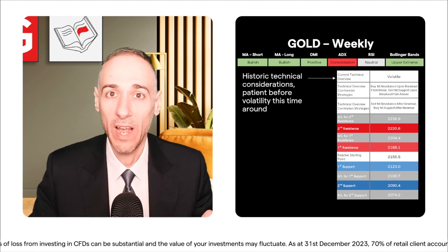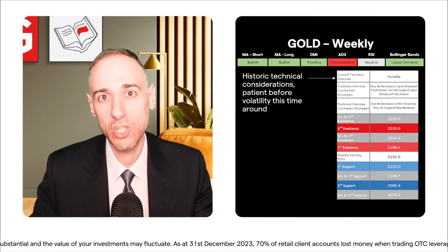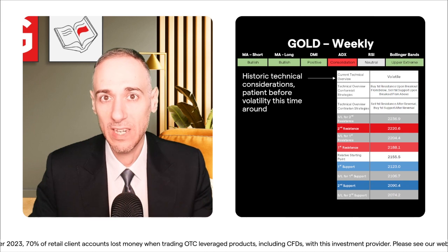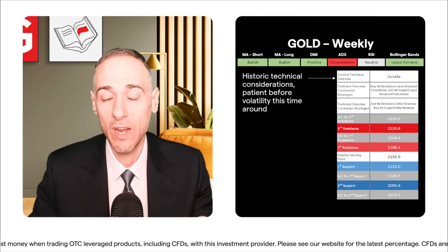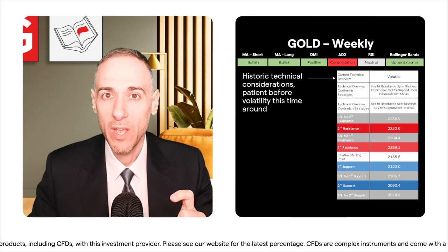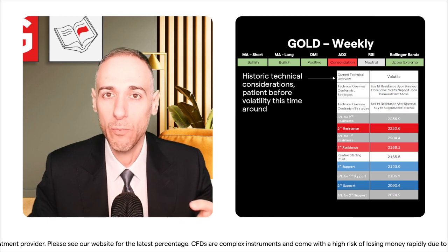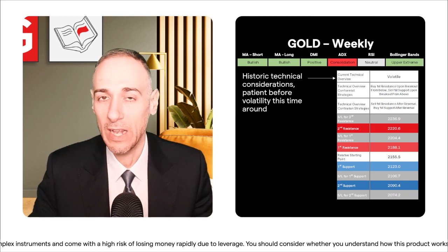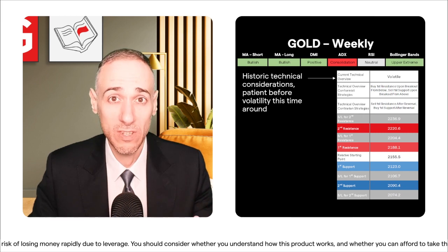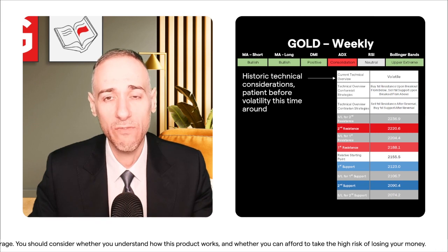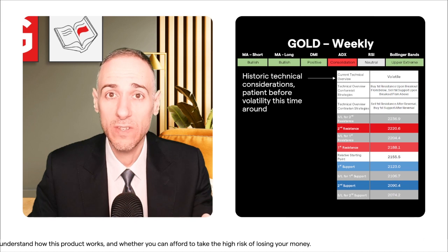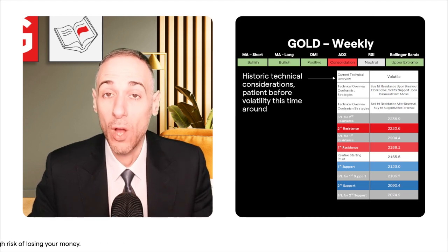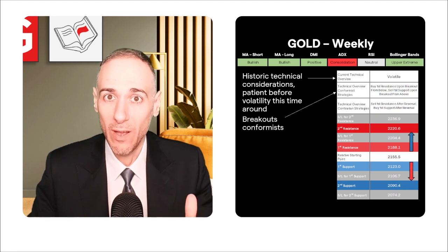The technical overview for both the weekly and daily is 'volatile,' which has a lot to do with historical technical considerations. Similar to what we saw with WTI oil, when there was more geopolitical risk premium, it meant more large moves on the daily time frame that could kick things in one direction or another. With gold, there's something lurking beneath — more on that in fundamentals. Historically it's been contrarians that did better than conformists until recently, when the volatile move gave conformists more follow-through.